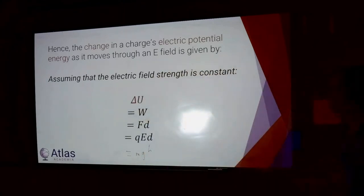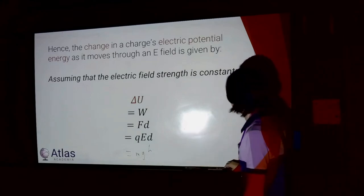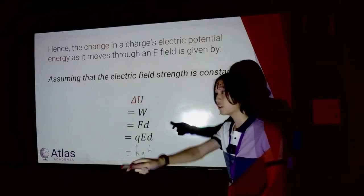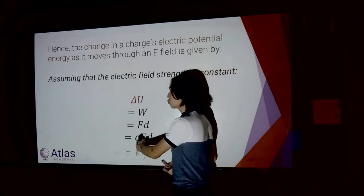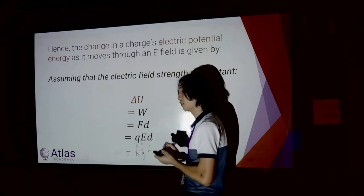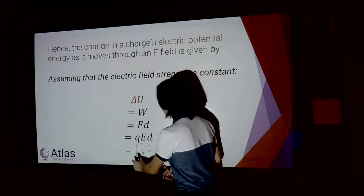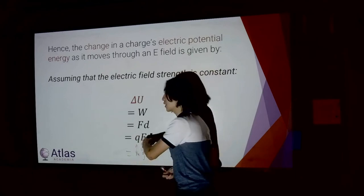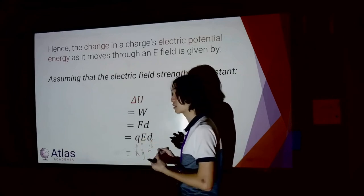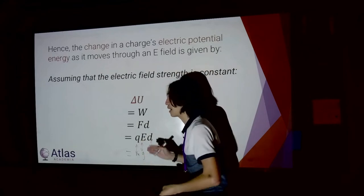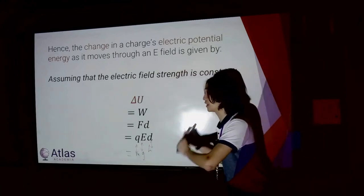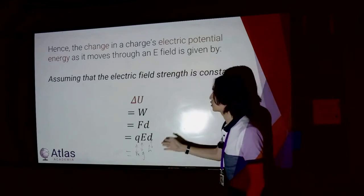We can draw even more parallels. Q and M are both field properties — Q gives you your electric field, M gives you your gravitational field. G and E are both field strengths: gravitational field strength and electric field strength. D and H are both your displacement — the distances parallel to the field lines, i.e. the component of displacement parallel to your force. Electrical potential energy is very much the same as gravitational potential energy.